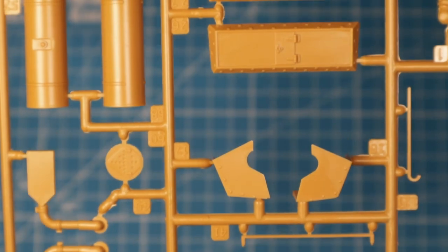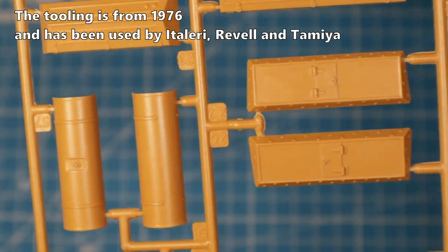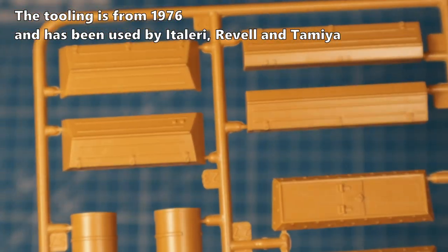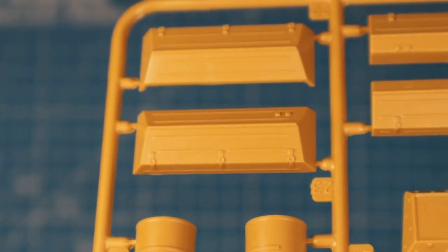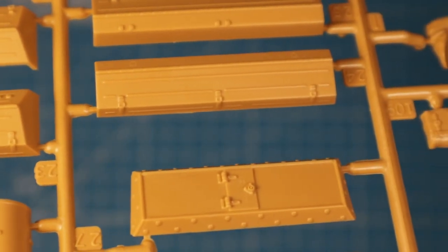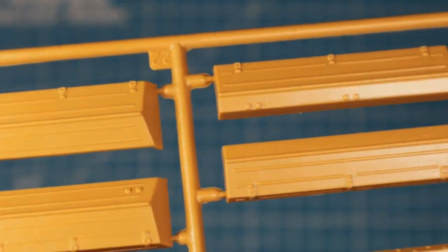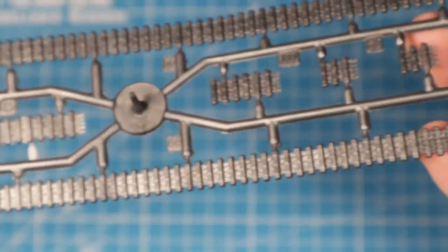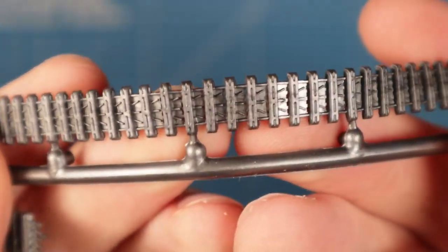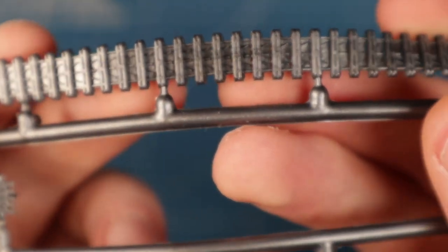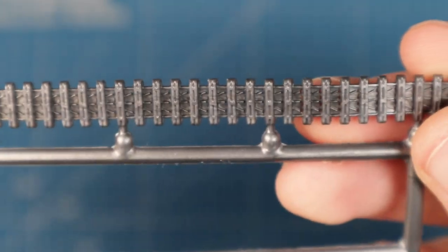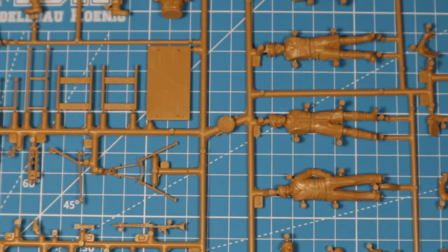The kit sells for around 30 euro right now and is part of Italeri's Africa series L Alamein. I already reviewed the Panzer 4 L Alamein on this channel. The included tracks are made from rubber. They look all right and are what you would expect from a kit in this price range.